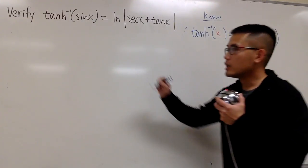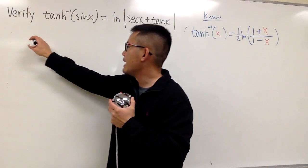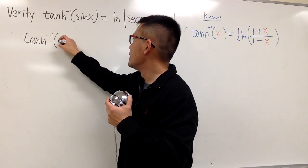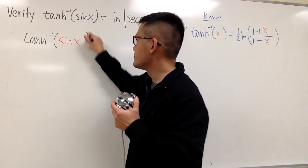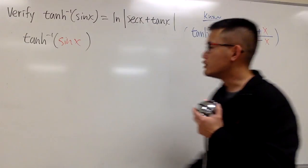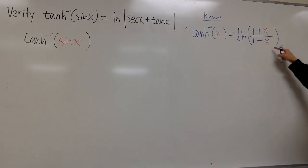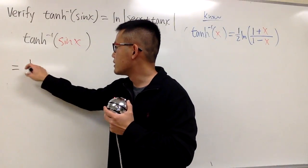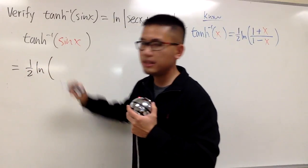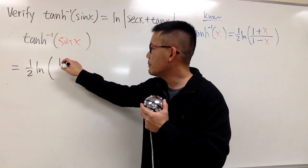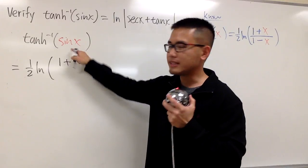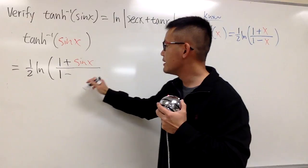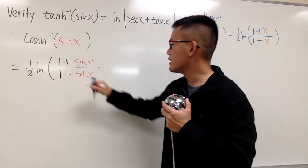We need to know that the inverse hyperbolic tangent of x is also an ln function: it equals one-half times ln of (1 plus x) divided by (1 minus x). So the inverse hyperbolic tangent of sin x — where the input is sin x — becomes one-half ln of (1 plus sin x) divided by (1 minus sin x).